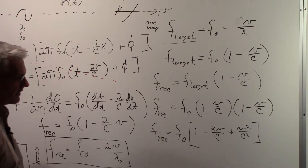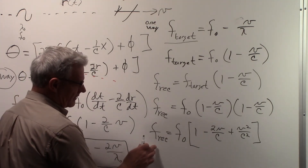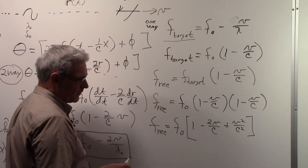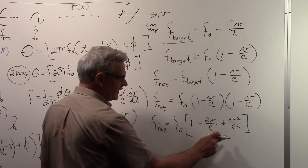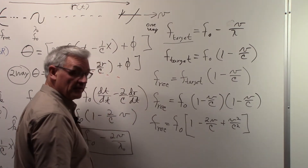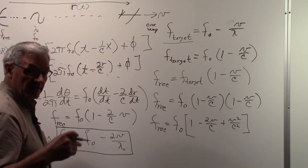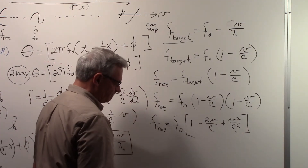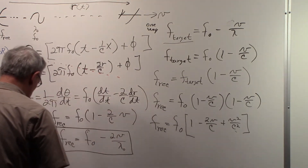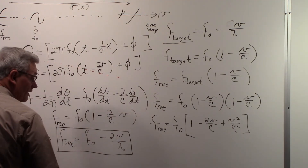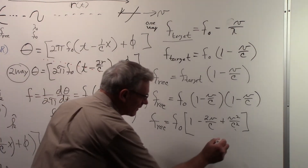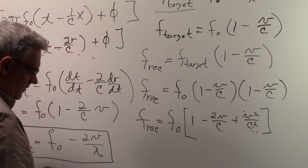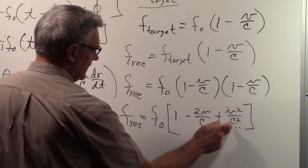This is a more correct formula in the non-relativistic case for the actual Doppler shift. Since c is such a large number compared to any velocity — even the velocity of a satellite — the v²/c² term can be ignored. But for completeness and correctness, it is actually there.